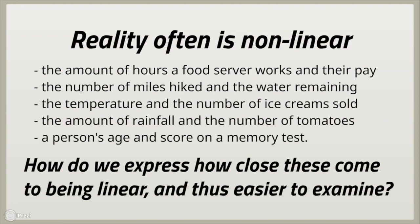In a negative fashion, here's another example: the number of miles hiked by a hiker and the amount of water remaining in their pack. Unless they're sipping water or taking water breaks at very regimented intervals, that is generally not a perfectly linear situation. Here are some other examples too — the amount of rainfall and the amount of tomatoes that come out of a garden. That would be a situation that probably is not in a straight line whatsoever.